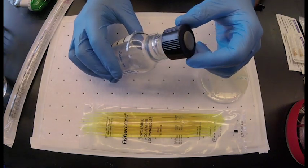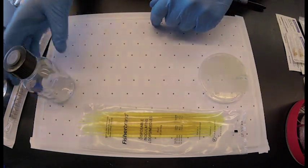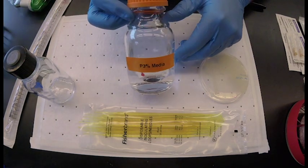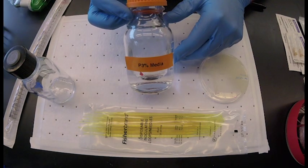The media for our methanotroph contains three components. P3% media, which contains 3% salt,